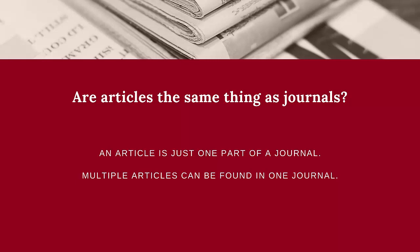First, there is one thing to clarify. Articles are not the same thing as journals. An article is just one part of a journal, and there are usually multiple articles in one issue of a journal. However, when we look at journal articles, we also want to look at the journal as a whole.